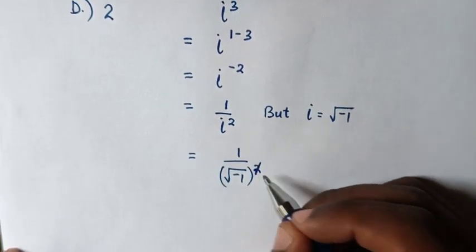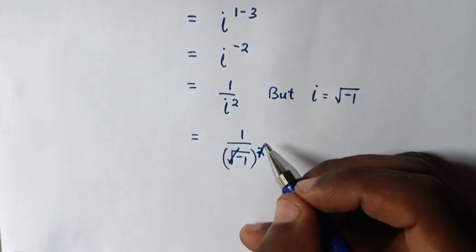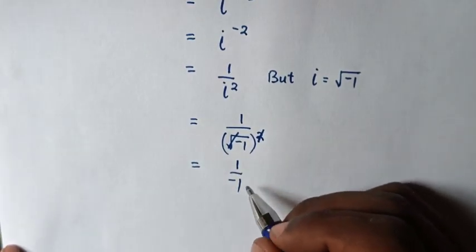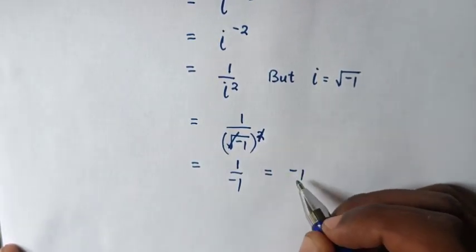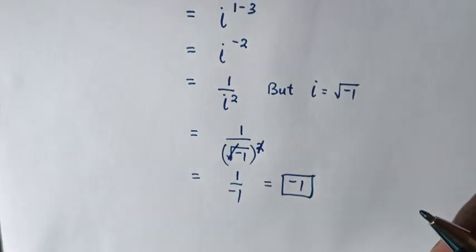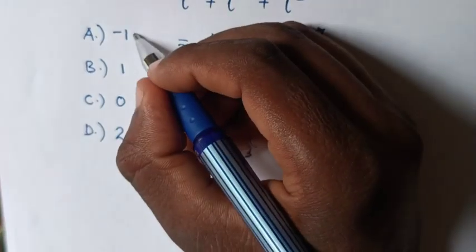The square will cancel with the square root, so this equals 1 over -1. One over negative one is negative one, so this is our final answer, which in the multiple choice is A.